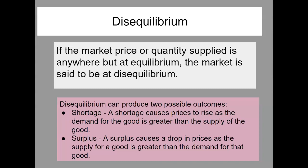There are two possible outcomes to disequilibrium. There can be a shortage — this occurs when the demand for a good is greater than the supply of the good. Every once in a while a toy comes on the market that's really hot. I remember the year the Wii came out and people were staying overnight outside of Best Buy to get the Wii the morning the store opened. There was a shortage, and in fact they raised the price of the Wii quite a bit for the following deliveries.